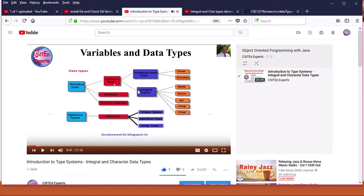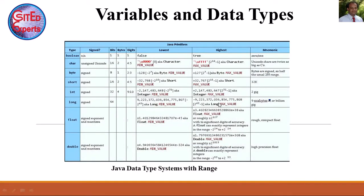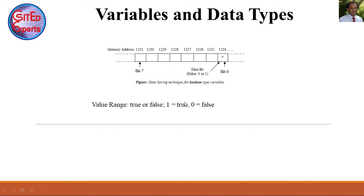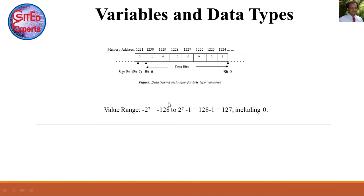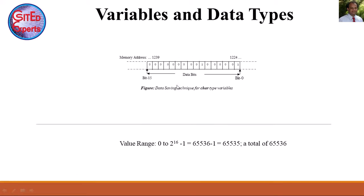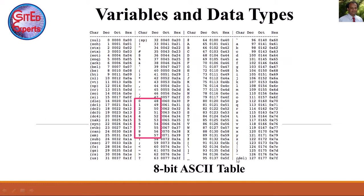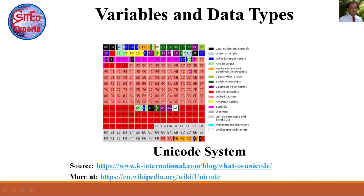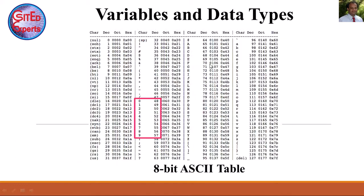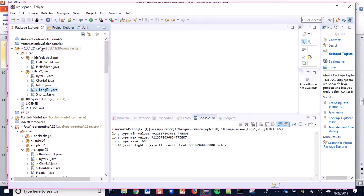I have shown the basic characteristics, range and value range of byte types, short types, integer type, and long type. I have also demonstrated character type, the difference between short and character type, and explained the ASCII chart and Unicode system. I have updated my Eclipse project CAC 1321 review with some actual small programs.